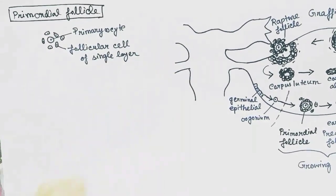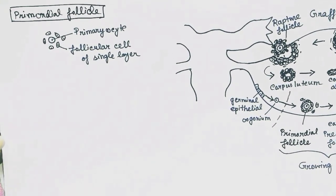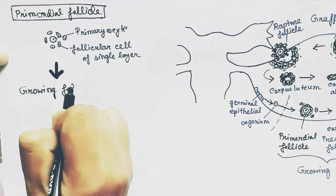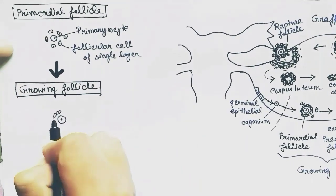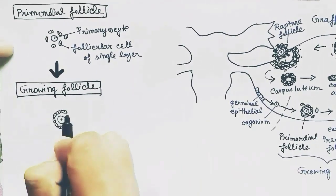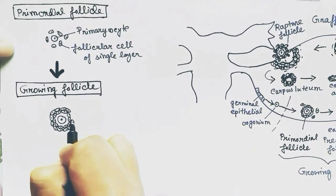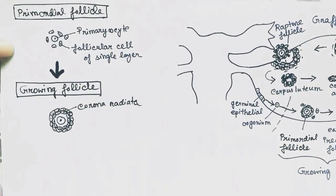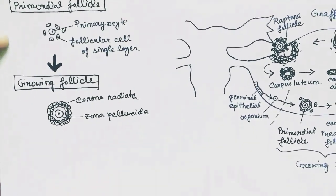Next, the growing follicle. In the growing follicle, the oocyte remains at the center and the follicular cells surround the oocyte with more than one layer. The first layer of follicular cells is called the corona radiata, and the zone between the oocyte and the corona radiata is called the zona pellucida.